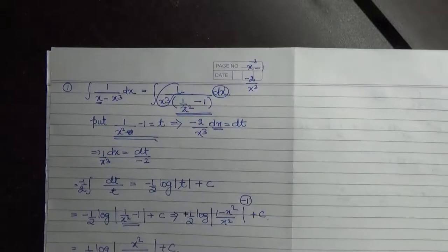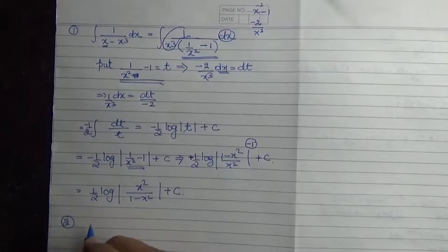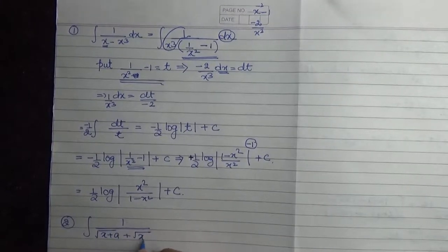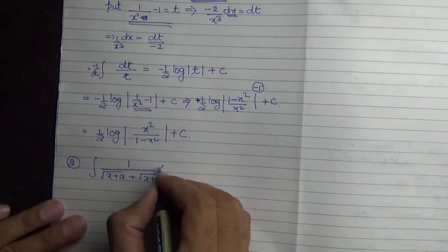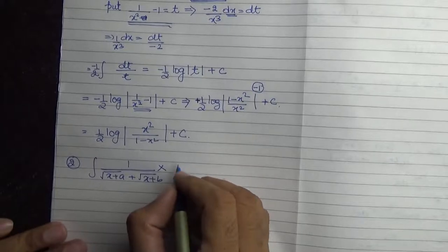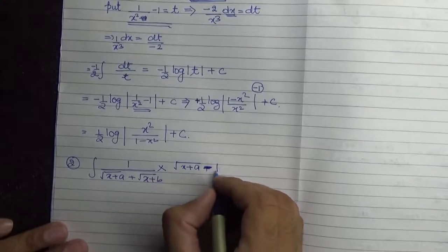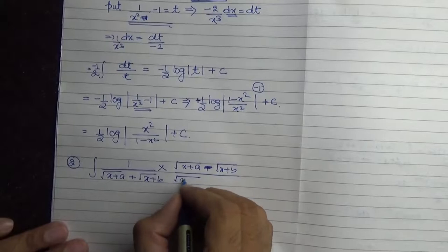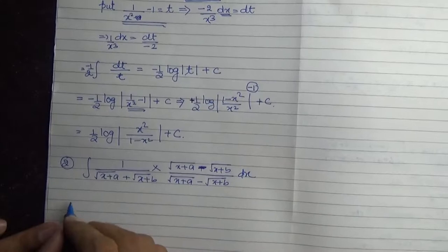Second question: integration of 1/(√(x+a) + √(x+b)) dx। इसमें आप क्या करेंगे — इसको rationalize कर दीजिए। Multiply by (√(x+a) - √(x+b)) / (√(x+a) - √(x+b)) into dx।